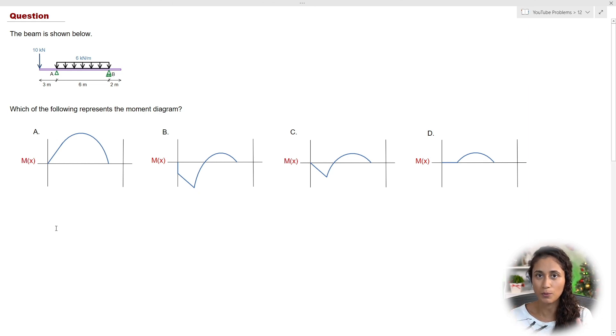To determine the moment diagram, the first thing we need is the shear diagram. Once we determine the shear diagram, then we can take the area under the shear and that will give us the moment diagram.